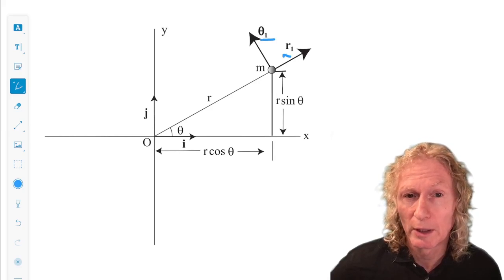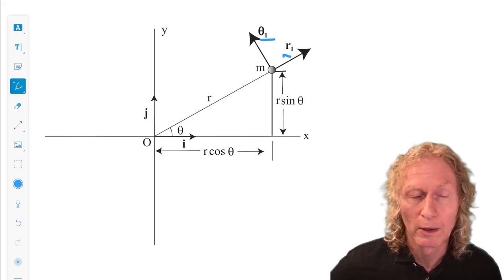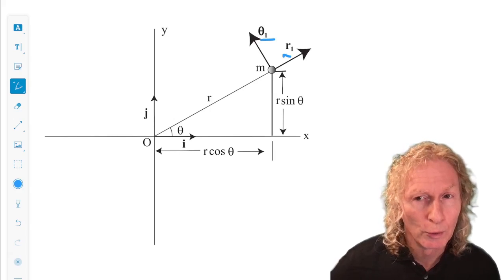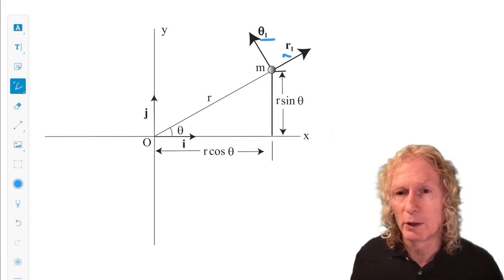Unlike the i,j unit vectors, r₁ and θ₁ do change in time their direction but not their length.